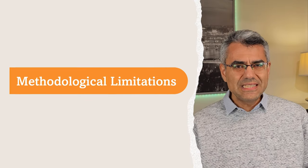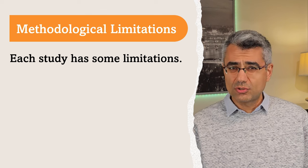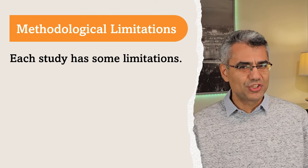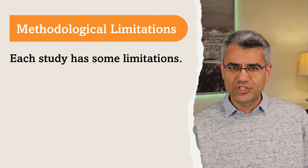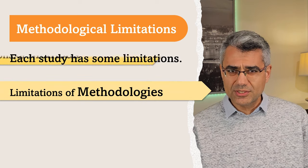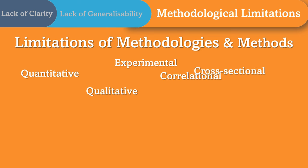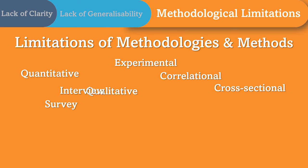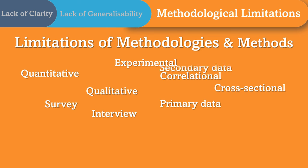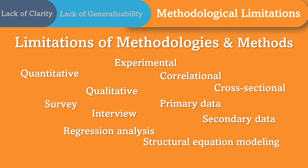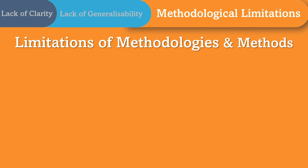The third common type of research gap is about methodological limitations. Each study has some limitations, making this one of the most common research gaps to address. The three examples for this group are limitations of methodologies, methods, or measurements. Each methodology and method has its own limitations. For example, quantitative research, qualitative research, experimental studies, correlational studies, cross-sectional research, survey, interview, primary data, secondary data, regression analysis, and structural equation modeling — each has limitations that you can address using other methodologies and methods.